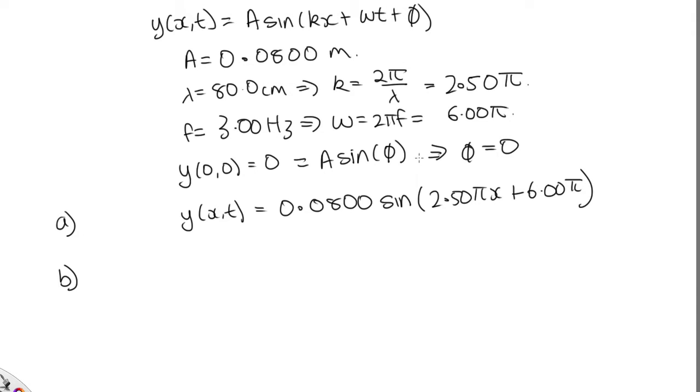For part b, we need to choose our phase constant, because we're now told that y at x = 10 centimeters (0.10 meters) and t = 0 seconds is equal to 0.